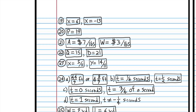For number 20, please understand that the problem is only asking for the number of party hats, not the number of balloons. If I remember correctly, that problem is balloons and party hats. So if you wrote the number of balloons, that's okay — you don't have to subtract any points — but we're only looking for the number of party hats.